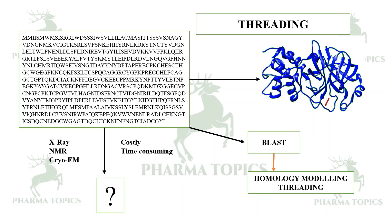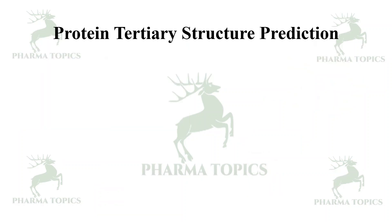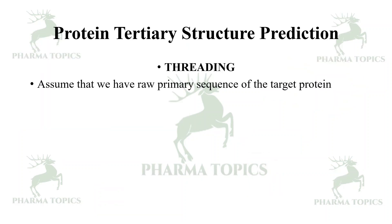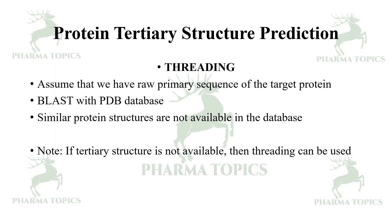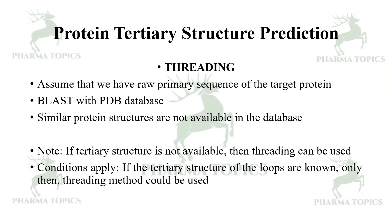You can do a BLAST with the NCBI server and then go for homology modeling or threading. In the previous video we covered homology modeling, and now we will see what threading is. Threading assumes we have a raw primary sequence of the target protein. If we BLAST against the PDB database and similar protein structures are not available — for homology modeling you need at least 40% sequence similarity with a structure in the PDB — then if that is not available, threading could be used.